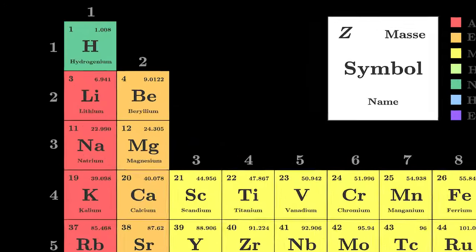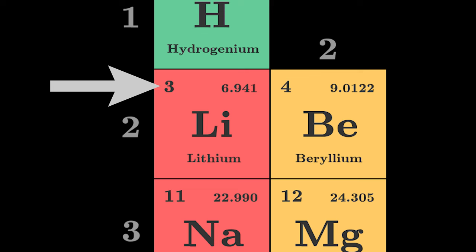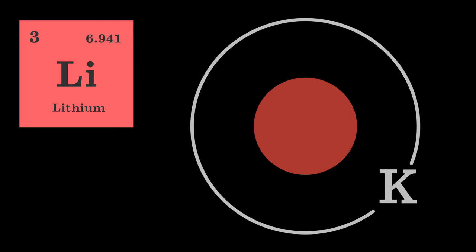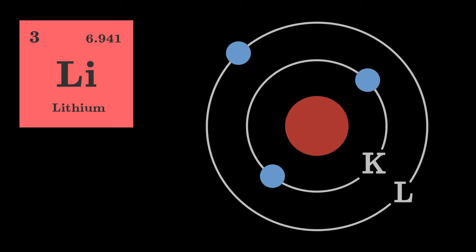The lithium atom has the atomic number 3. This means it has three electrons. We start with the K-shell. The K-shell can hold two electrons, so we fill it with two electrons. The third electron is added to the next shell, the L-shell.